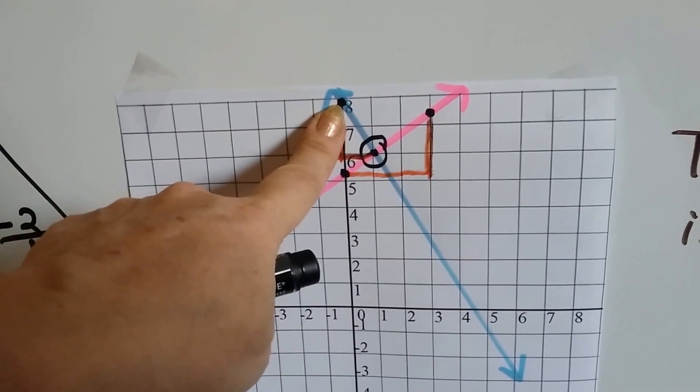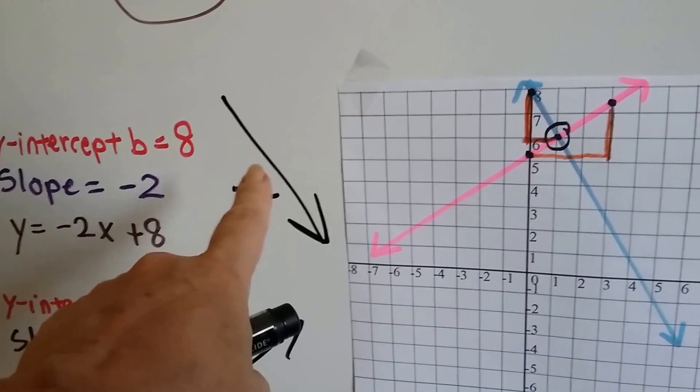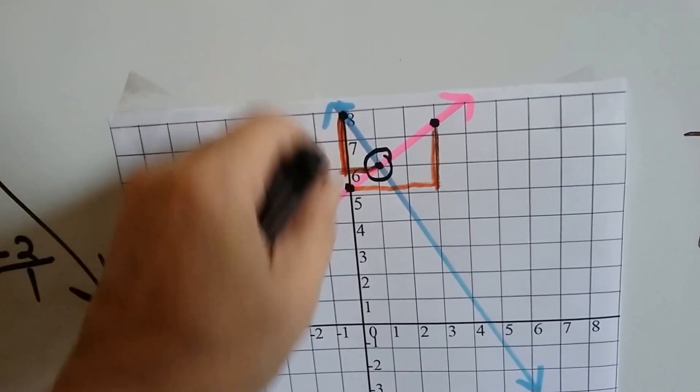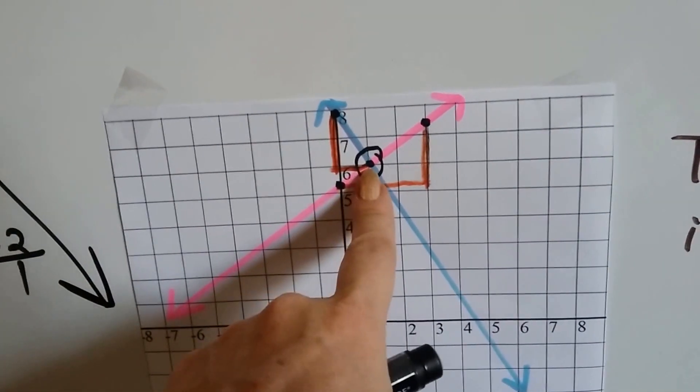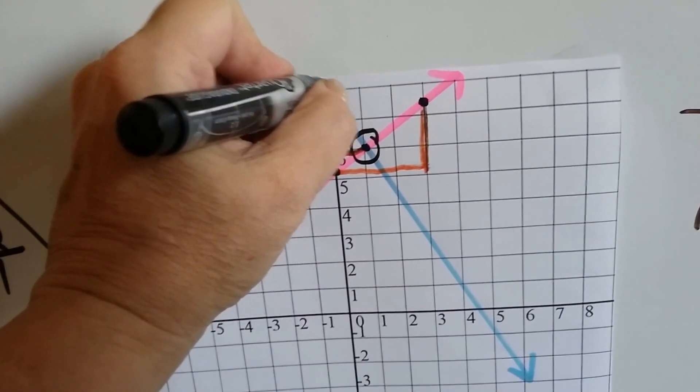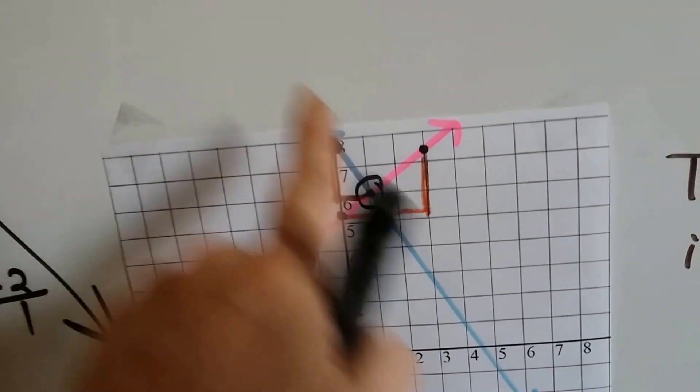And it's got a slope of a negative 2. So we've got negative 2 over 1, so it's going to go down this way. So we go down 2, 1, 2, and we go over 1, and it puts us right there at that bullseye. So I had this point and this point, and I drew my line through them. That's the blue line.